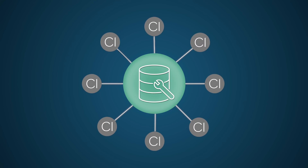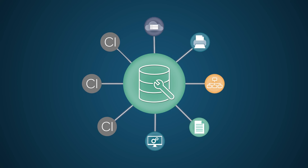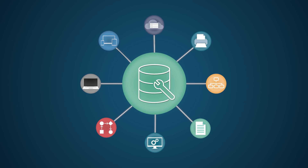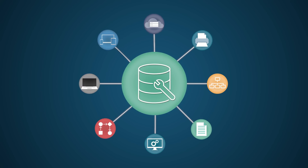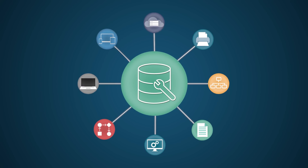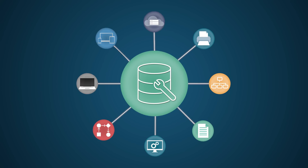The CMDB is primarily a data repository used to store information describing configuration items, or CIs, as well as some asset-related information. Each CI has information which defines what it represents, its attributes, and its relationships to other CIs that support the services you deliver.